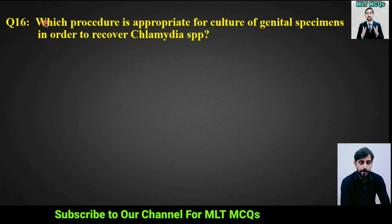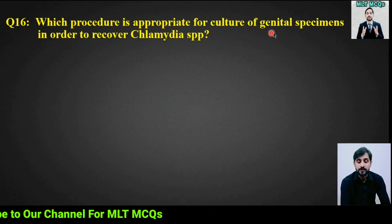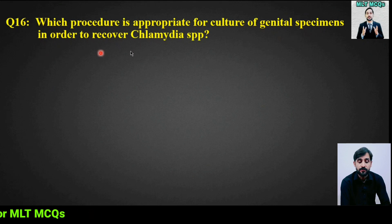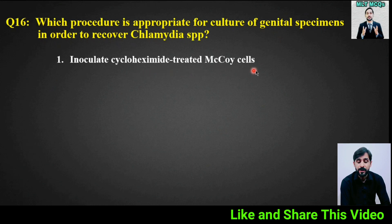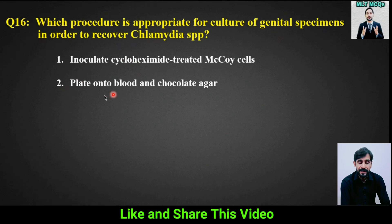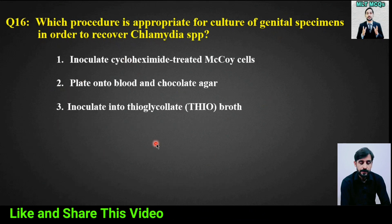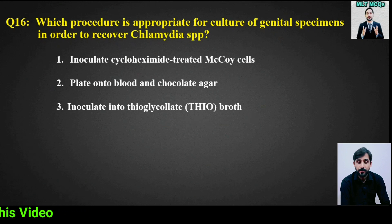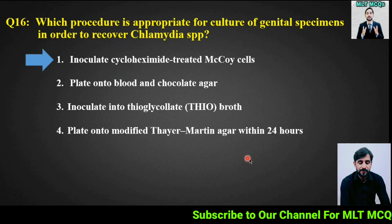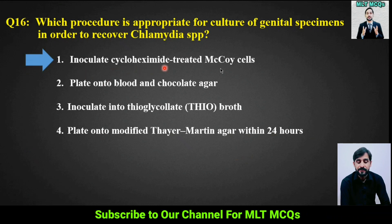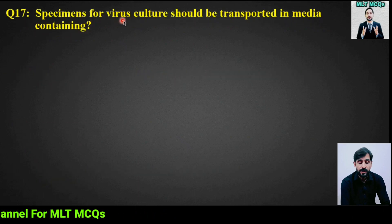MCQ number 16: Which procedure is appropriate for culture of genital specimens in order to recover Chlamydia species? The right answer is option 1: inoculate cyclohexamide-treated McCoy cells.